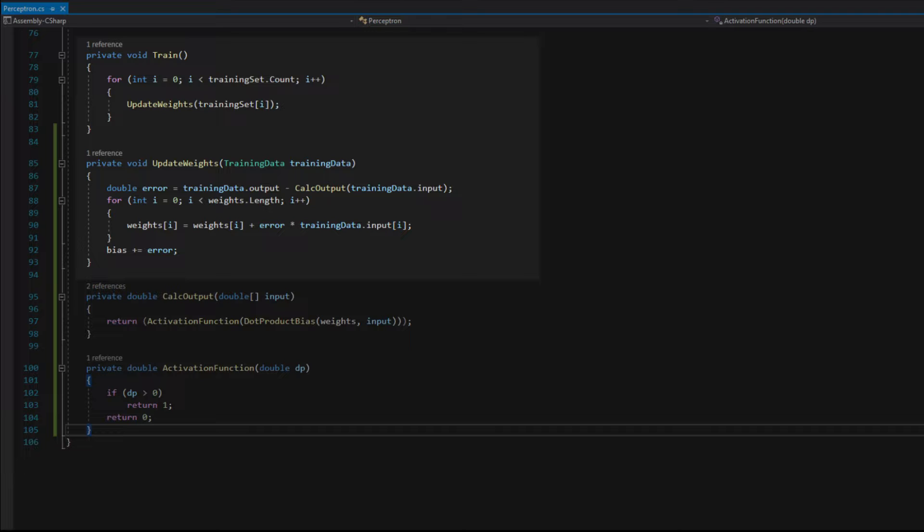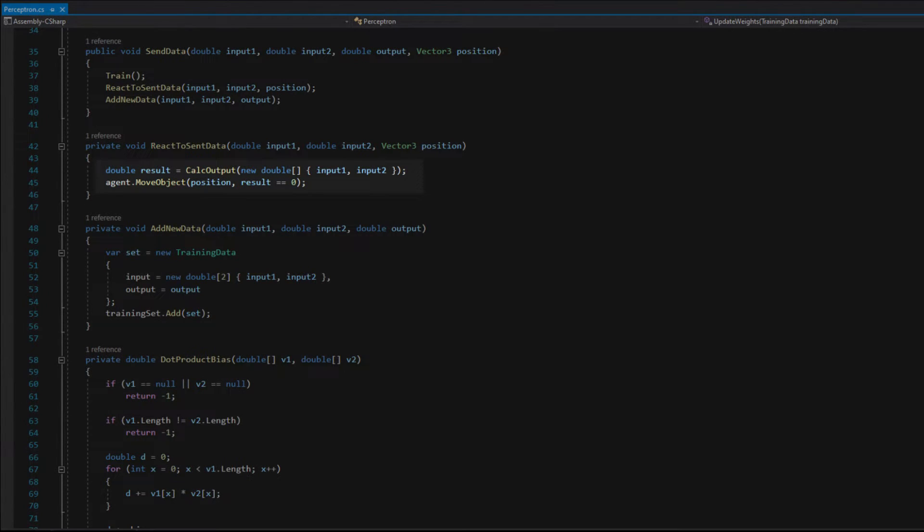First it calculates the output and updates weights based on the calculated error. Then it calculates the output from the received data and passes it to the hammer object, which will smash if the output is 0.